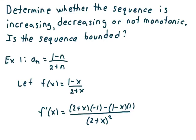The directions say to determine whether the sequence is increasing, decreasing, or not monotonic — so neither increasing nor decreasing. Is the sequence bounded? In example one, we want to look at the sequence where the nth term is defined by a sub n equals 1 minus n over 2 plus n.